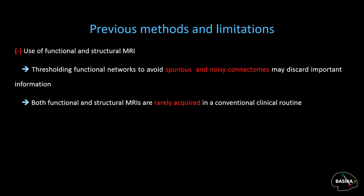Interestingly, the majority of these methods have extensively relied on resting-state functional MRI (fMRI) or diffusion MRI. However, analysis of functional networks is usually limited by the choice of a single or multiple thresholds for examining network topology, which may discard many important and discriminative brain connectivities. Besides, both structural and functional modalities are rarely acquired in conventional clinical routine.